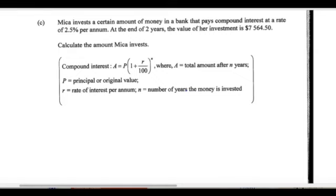Mika invests a certain amount of money in the bank and pays compound interest at a rate of — this is the rate, and at the end of two years, this is the value of her investment. So calculate the amount Mika invests. They give us the compound interest formula here. This amount is what she gets after two years — that will be E. N is the number of years, and R we have there.